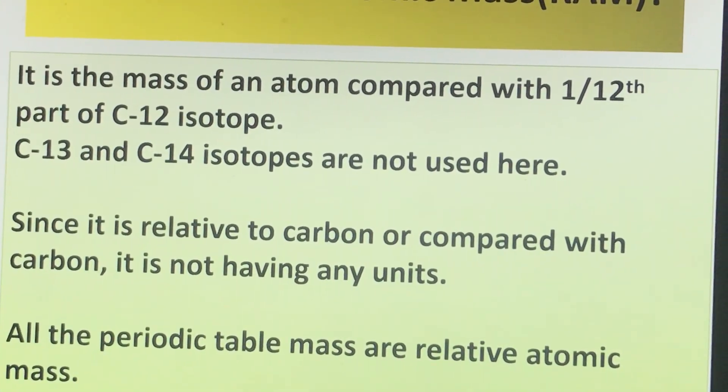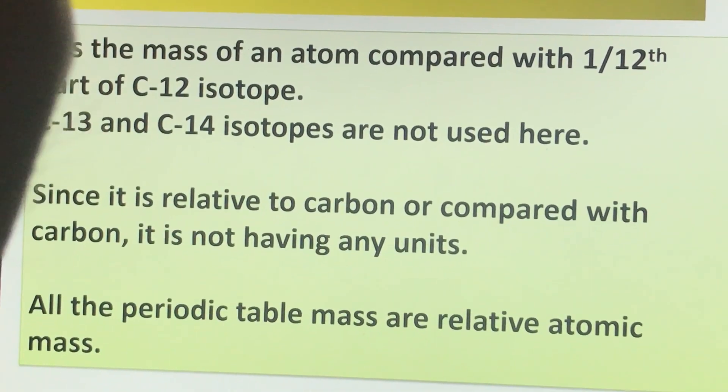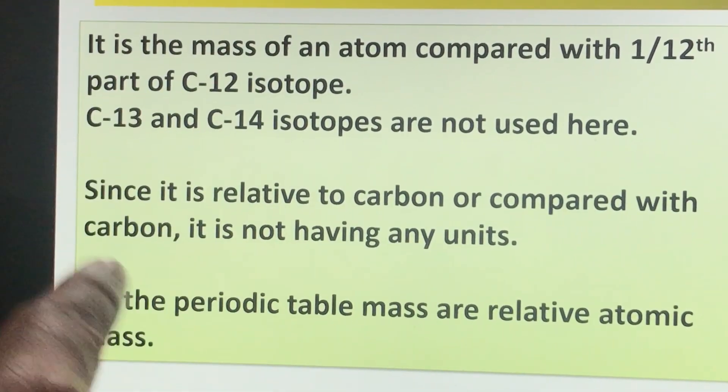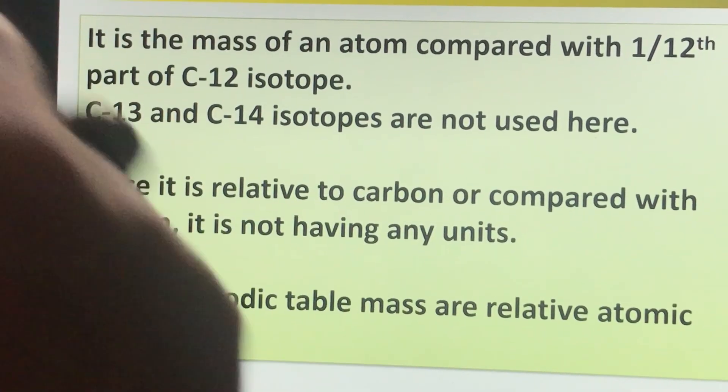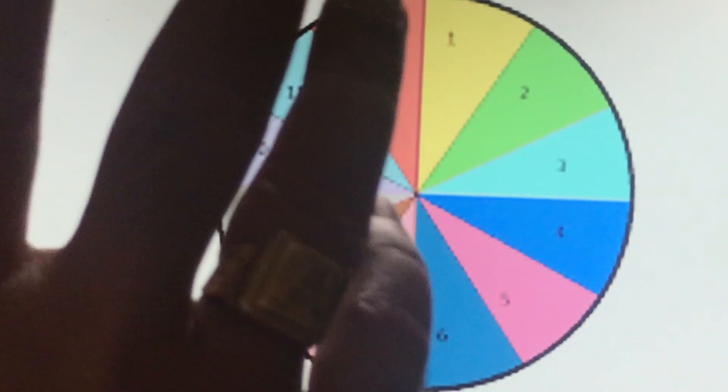Each part of carbon-12, like 1/12th, we compare with other atoms. In one atom of carbon-12 there are 12 hydrogen atoms if we compare by mass.